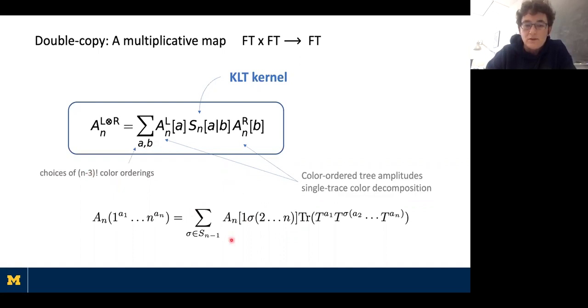On the right-hand side I have a left sector and right sector amplitudes given some argument alpha and beta that are summed over. Those summed-over labels are color orderings. In a theory that can work as the input, you must have some kind of color structure — like in Yang-Mills theory from the gauge group. That color structure allows you to write the full amplitude as a sum over color traces, summing over the (n-1)! permutations of the last n-1 labels, keeping one fixed due to cyclicity of the single trace. At tree level everything can be done with a single trace.